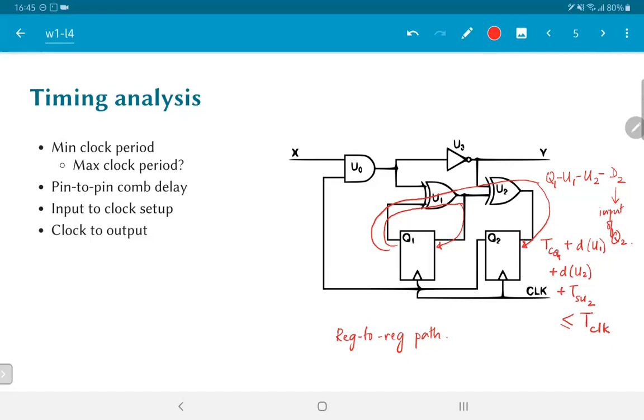This entire delay must be less than or equal to the clock period that is used for this circuit. If it is not, it means that the second edge at Q2 will come at a time such that it is before the data that came out of Q1 has had a chance to settle properly at the input D2. Therefore, Tclock has to be greater than or equal to Tcq1 plus D of U1 plus D of U2 plus Tsetup of 2. And we can write the same equation for all the register to register paths that are present in the circuit.